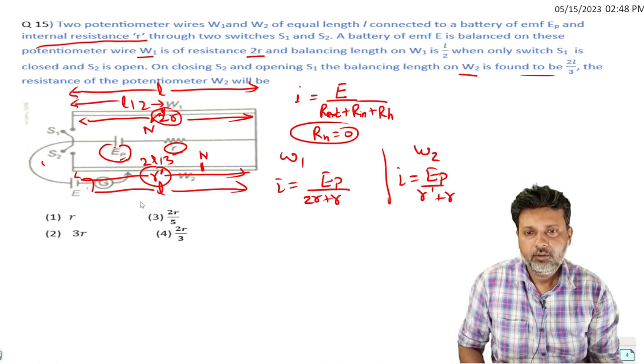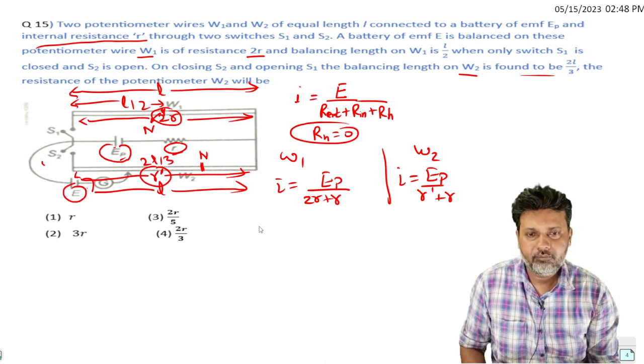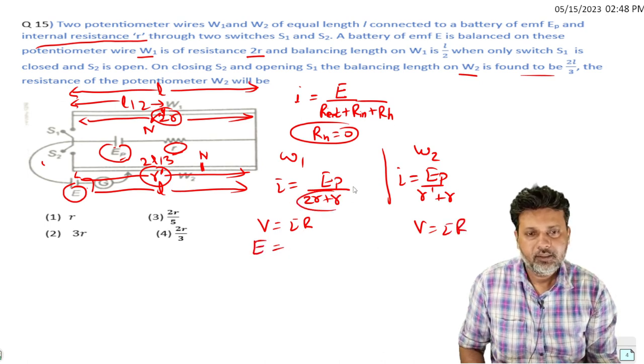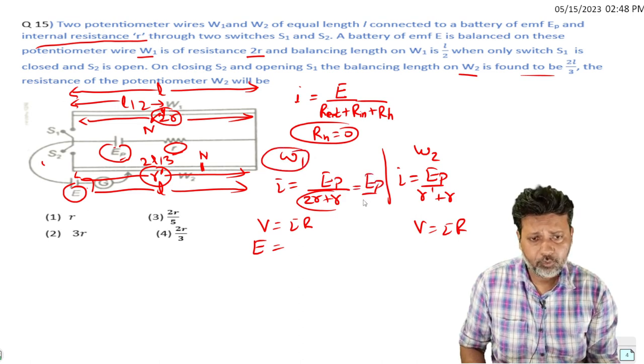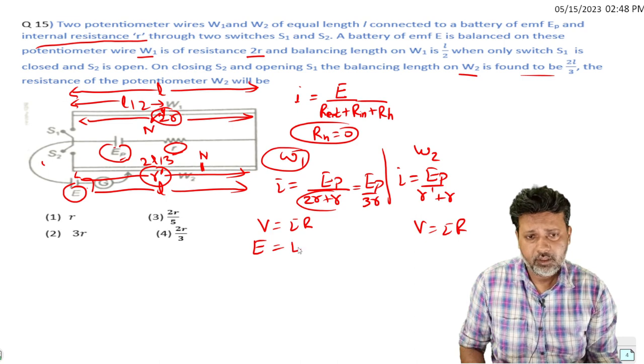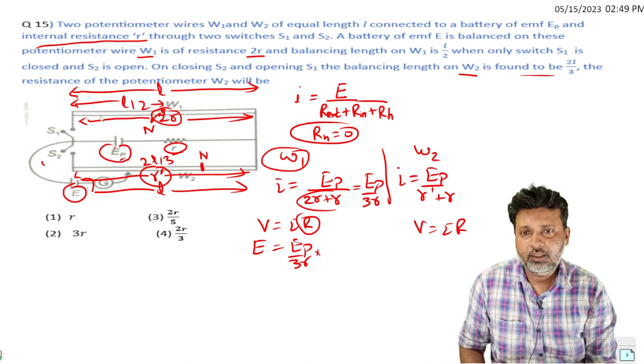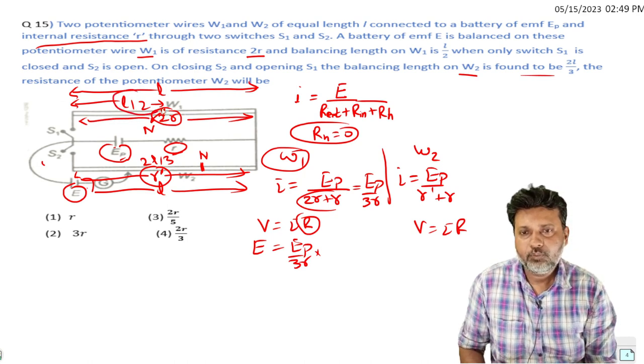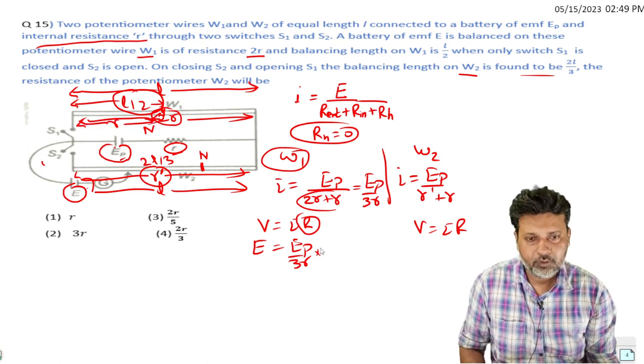At the balance point, voltage equals I times r. V equals I times r where I equals E_p upon 3r. The resistance of W1 is 2r total, so at balance point l/2, the voltage from this will be I times r.